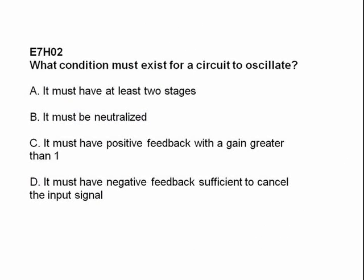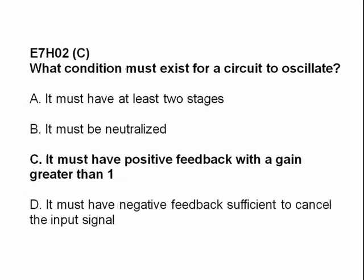What condition must exist for a circuit to oscillate? A: it must have at least two stages; B: it must be neutralized; C: it must have positive feedback with a gain greater than one; D: it must have negative feedback to cancel the input signal. Answer: C — it must have positive feedback with a gain greater than one.